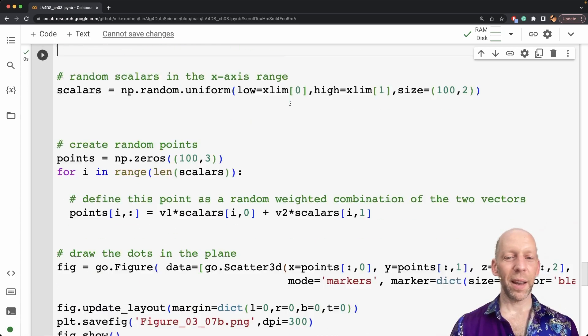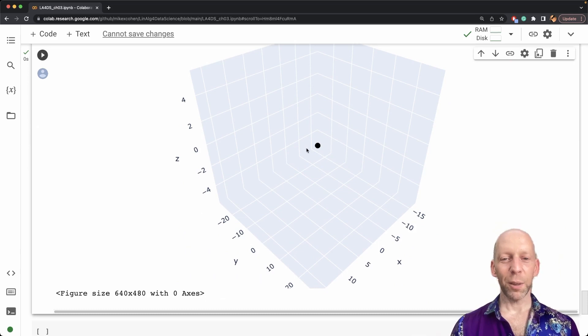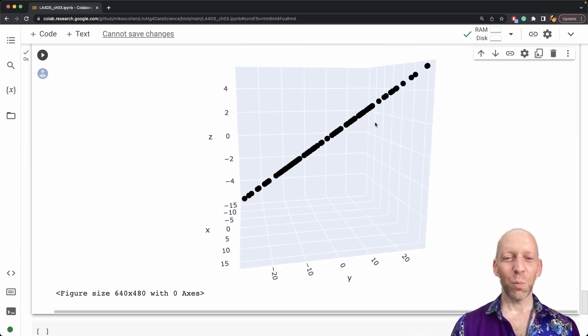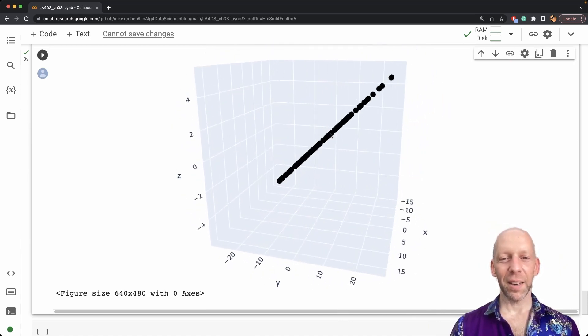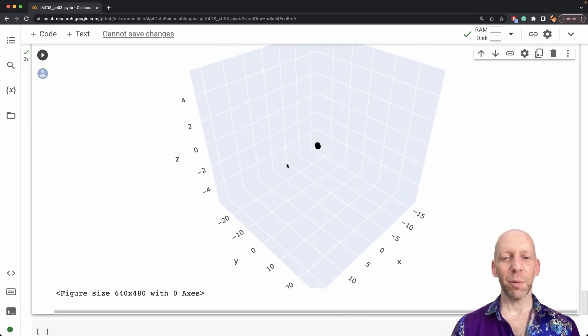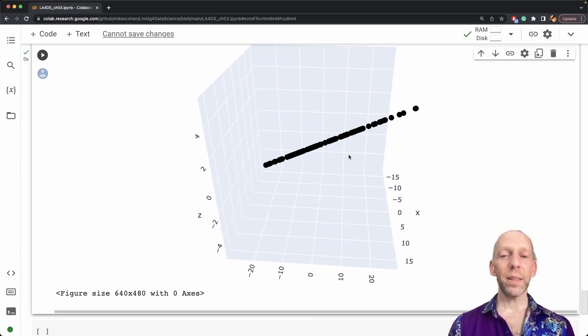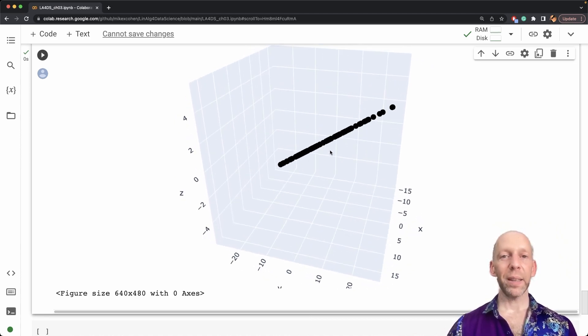So we run this code, and voila, so it looks like it's just a point. But if we rotate this around, then you can see that it's actually a line, it is just a straight line in three dimensions. So it's a one dimensional subspace that is embedded in a three dimensional ambient space.